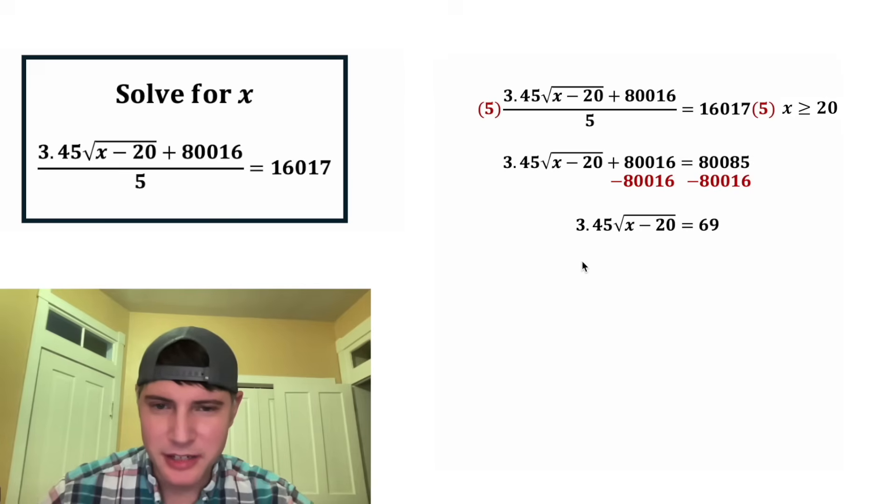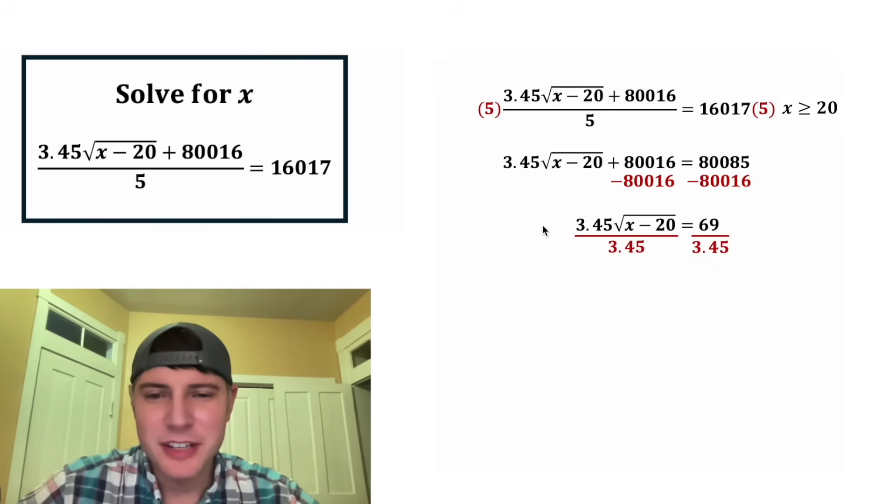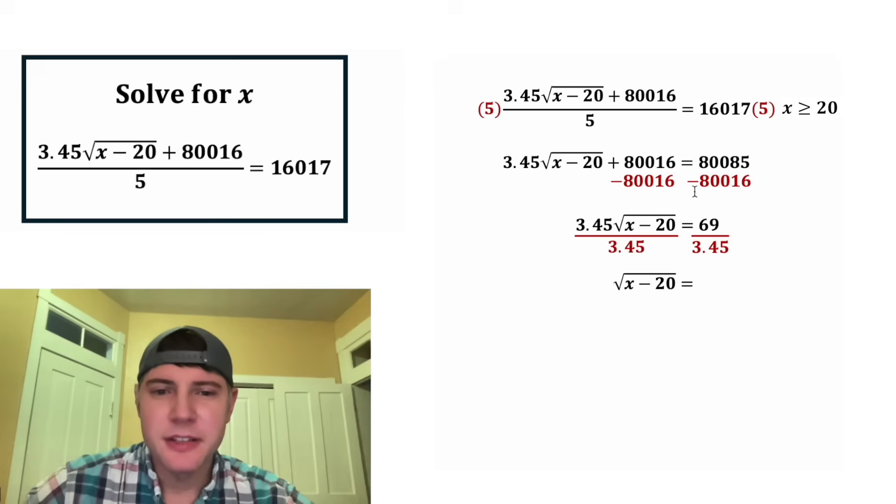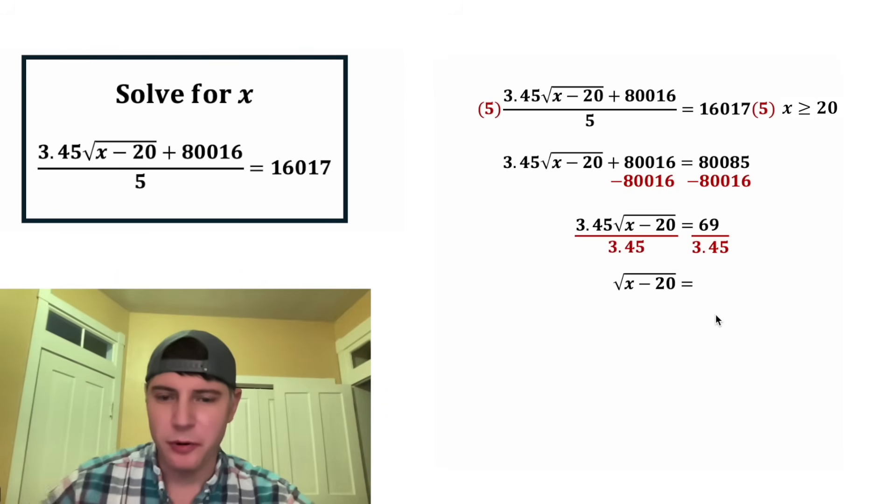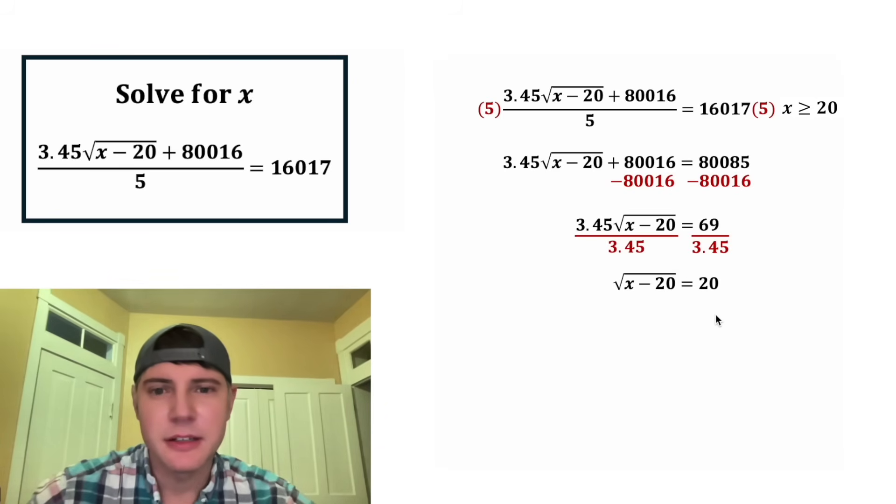And then next, we can divide both sides by 3.45. On the left-hand side, this 3.45 and this 3.45 will cancel each other out. So we're left with square root of x minus 20. And on the right-hand side, 69 divided by 3.45 is 20.